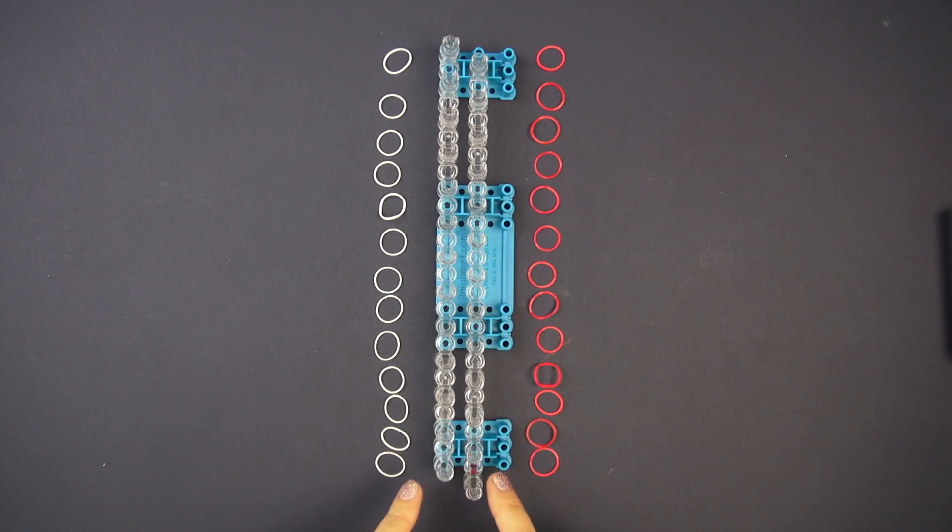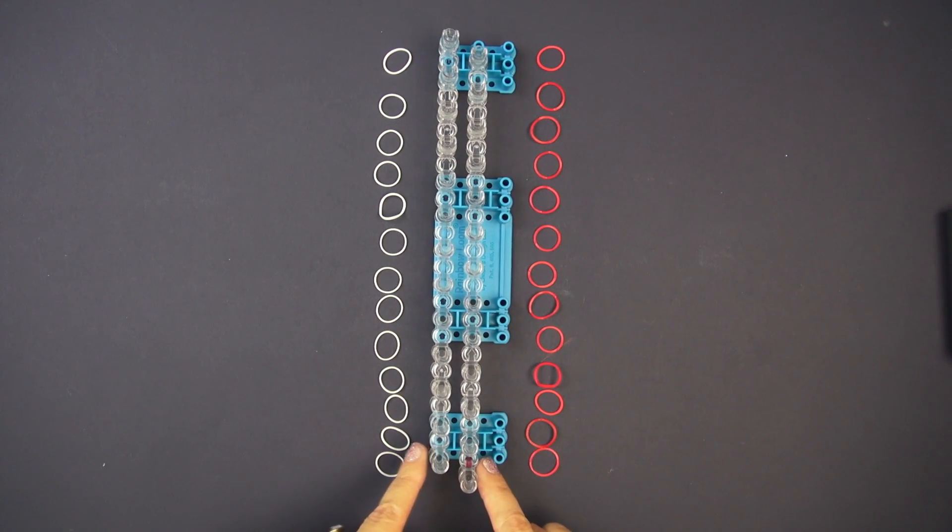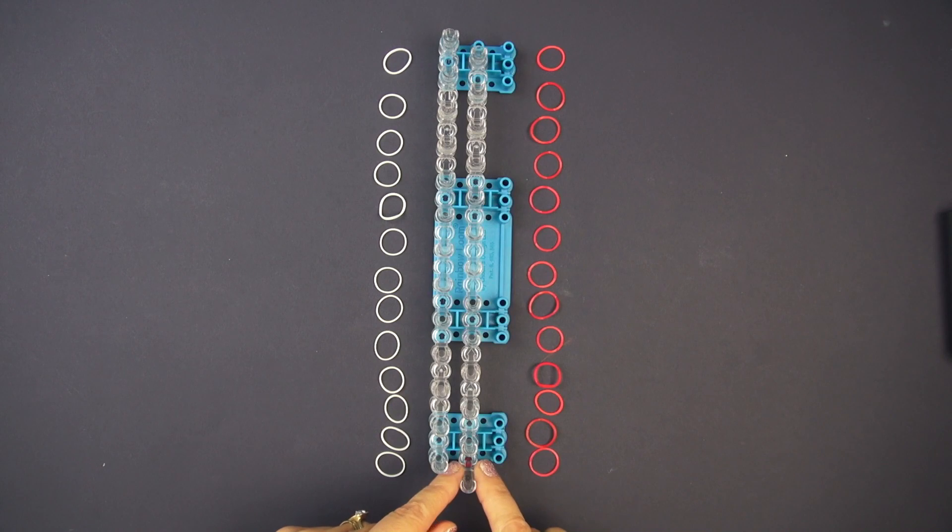The loom to start out is going to be pointing this way and there is an arrow that when I do a close-up you'll see better but that arrow needs to be pointing away from you and that's how we'll start.